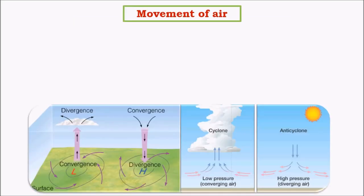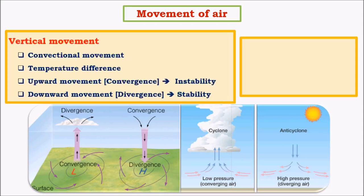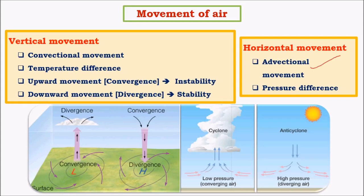First let us look at basic concepts and study the movement of air. There are two kinds of movement: one is vertical movement, also called convectional movement, and the other is horizontal movement, called advectional movement. There are two kinds of vertical movement: upliftment, where a parcel of air is lifted from its original position, and subsidence, where a parcel of air drops to the surface when its weight increases in the upper levels of the atmosphere.